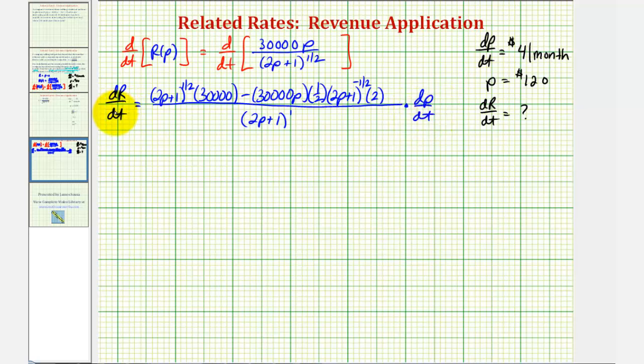Well, now we can find dR dt because we know p and we know dp dt. So let's go ahead and make our substitutions to find dR dt. Notice if p is equal to 120, 2p plus 1 would be 241. So we'd have 241 to the one-half times 30,000 minus, this would be 30,000 times 120.